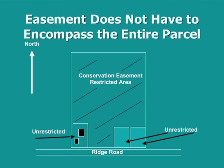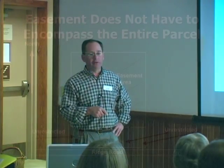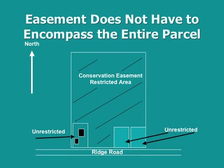The traditional way is that you survey this unrestricted area around the buildings. Most of the easements that we do handle the existing buildings in that way. We used to, back in the 70s and 80s, restrict the whole thing, and then anytime someone needed to come in for an addition or a new septic system or a new well, they had to go to the land trust or the holder of the easement and make sure that was all approved in advance. We quickly learned that was a zone we didn't want to have anything to do with, so now we leave that, in most cases, as an unrestricted area.